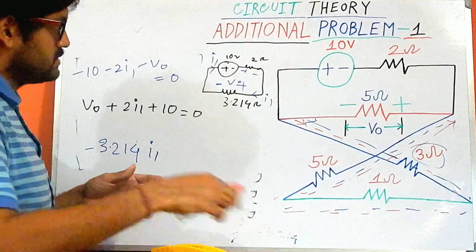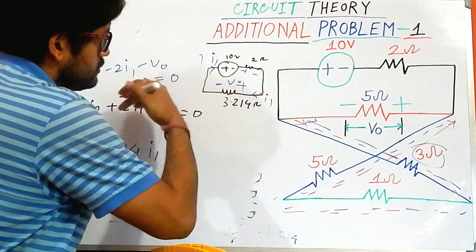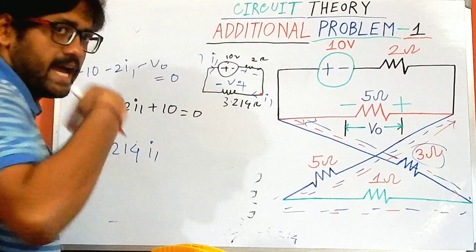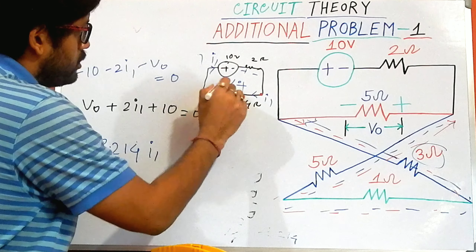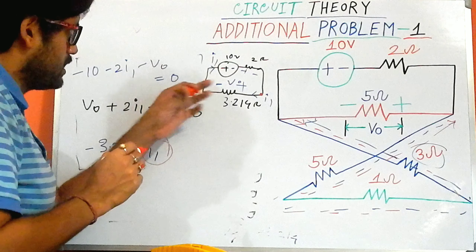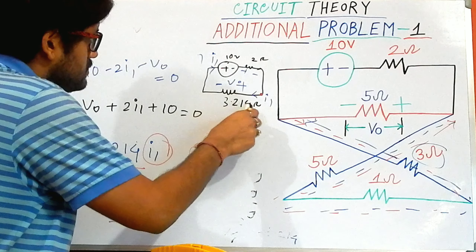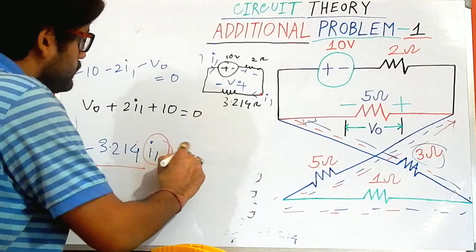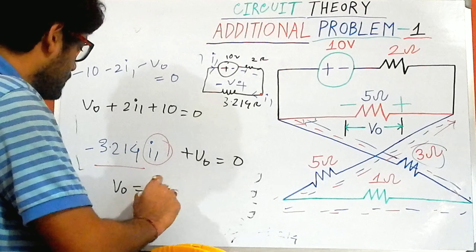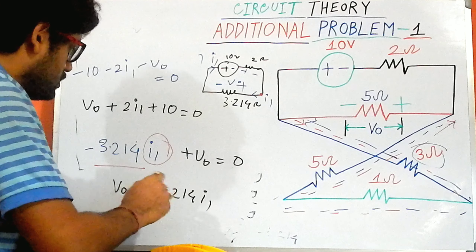Starting from the red line: the current flows from this side to this side, so the polarity of the resistance is plus/minus. Because of the sign convention, the voltage drop across this resistance is i·R = i1·R, and because of the plus/minus sign notation I take it as minus. So: −3.214·i1 + V0 = 0, which gives V0 = 3.214·i1.